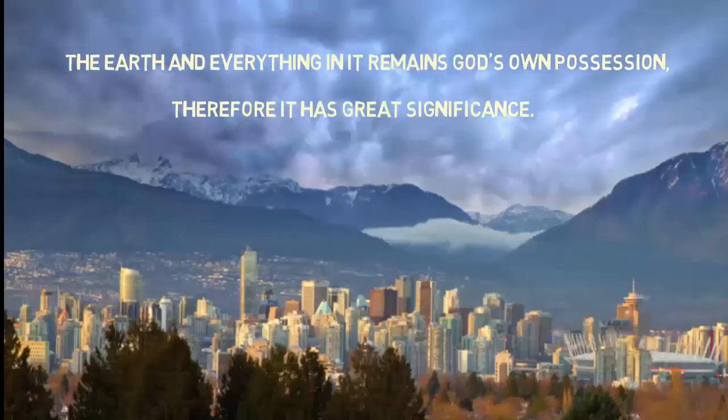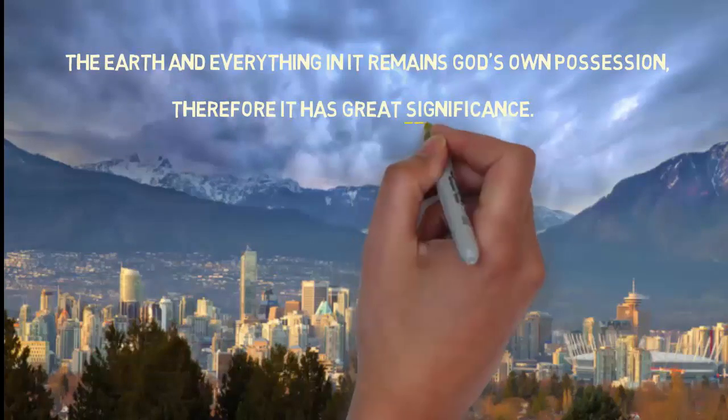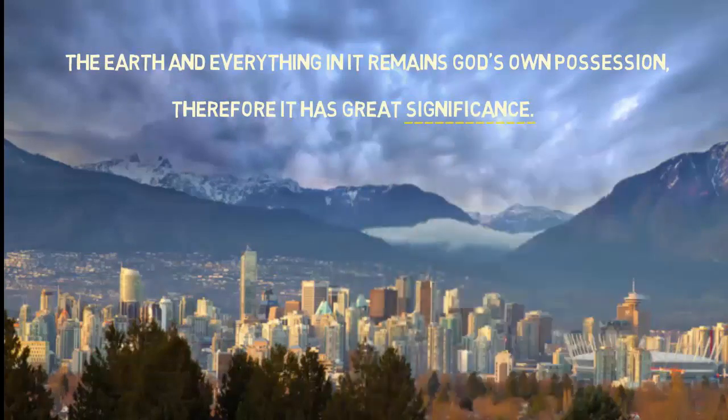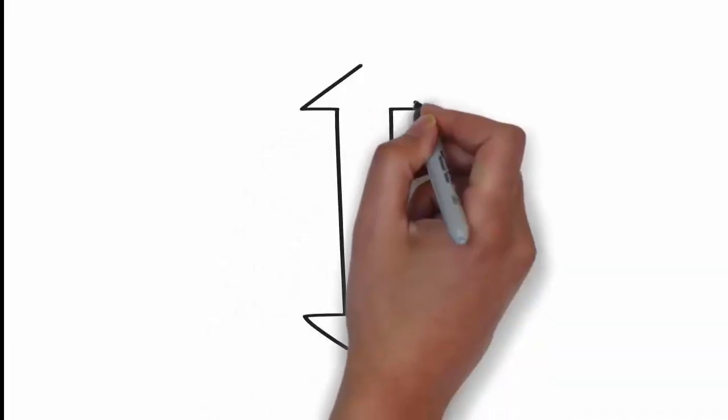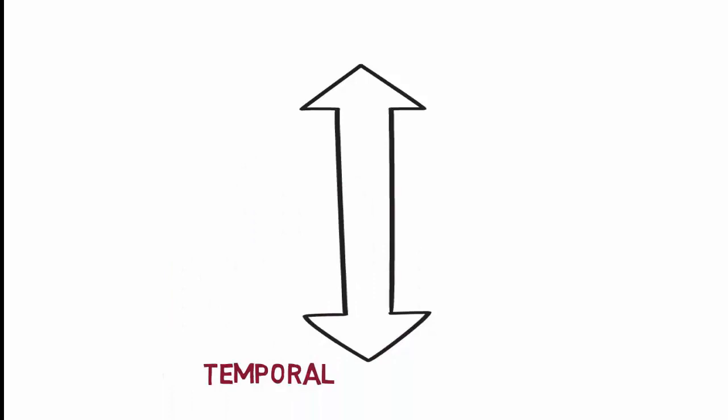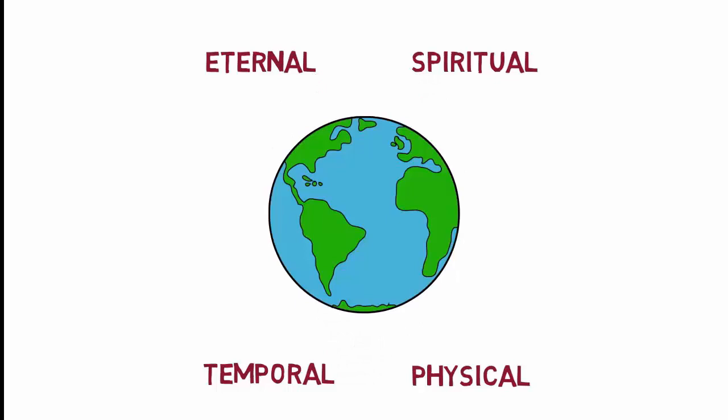Psalm 24:1 tells us the earth and everything in it remains God's own possession. Therefore, it has great significance. The historical outcome of Plato's double-decker bus idea created a disastrous gap between the temporal and the eternal realm, and between the physical and the spiritual realm. This gap is unbiblical. Both realms are God's realms.